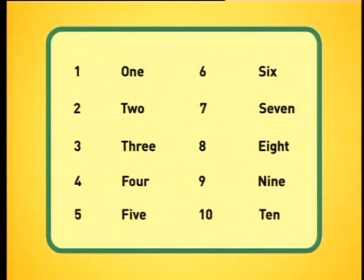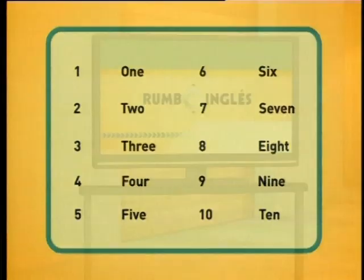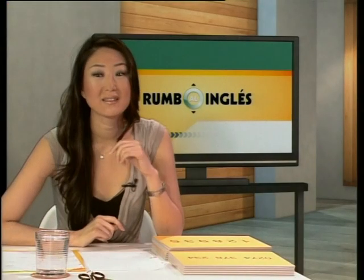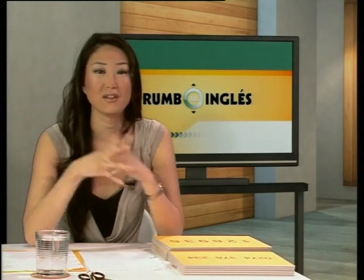Now count from ten to one, backwards. Ten. Nine. Eight. Seven. Six. Five. Four. Three. Two. One. Perfect. Good. That was a good countdown — cuenta atrás. Imagine like at New Year's Eve, we say ten, nine, eight, etcetera — Año Nuevo. Okay. Bien.